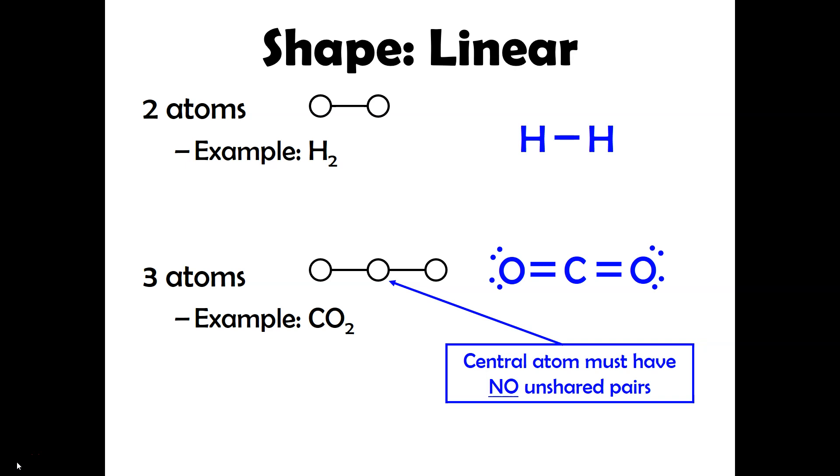So for example, with carbon dioxide, that's the Lewis structure. You can see that there's no unshared pairs around the carbon. You can see there's nothing there. And so that's what basically allows these oxygen atoms to kind of stick straight out. And so since it is in the shape of a line, you can expect the bond angle to be 180 degrees.